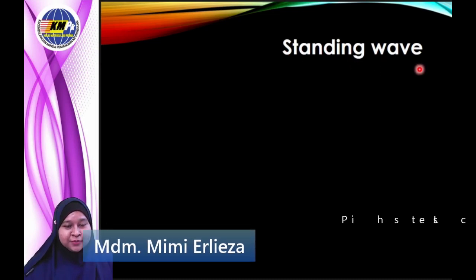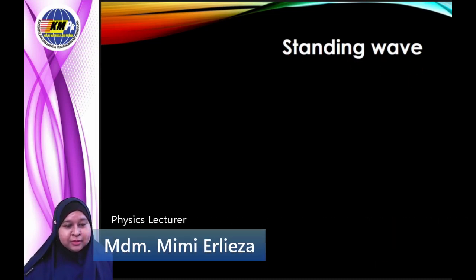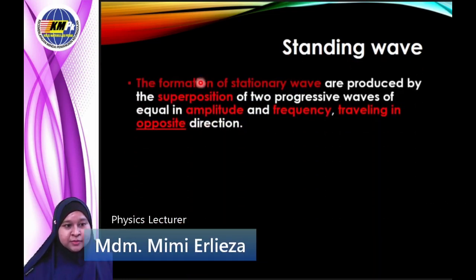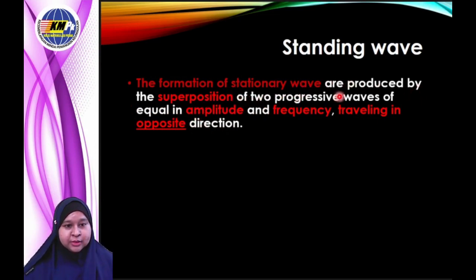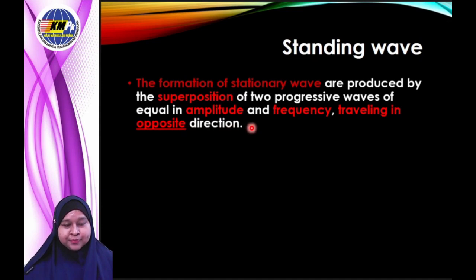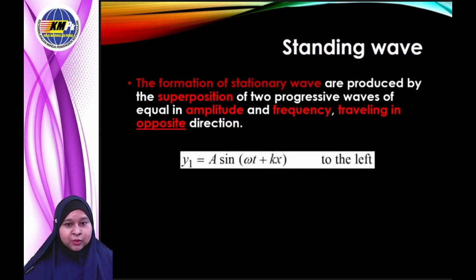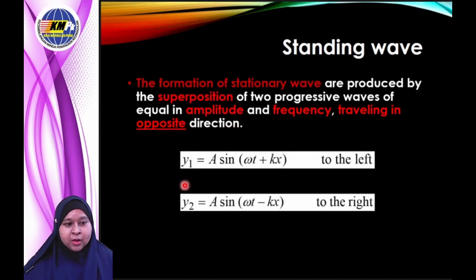Standing wave. The formation of a standing wave is produced by the superposition of two progressive waves of equal amplitude and frequency traveling in opposite directions. The equations for the progressive waves are: Y1 is equal to A sine of (omega t plus kx).